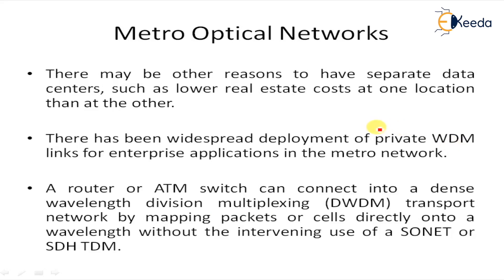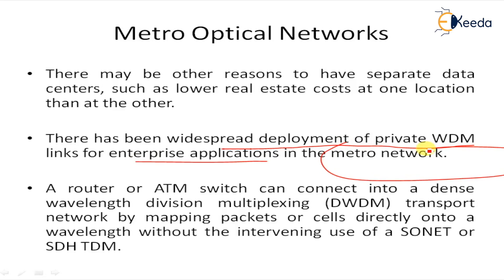This kind of scenario has generated widespread development of private WDM links for enterprise applications. For metro networks, a router or ATM — asynchronous transfer mode — switch can connect into a DWDM dense wavelength division multiplexing transport network by mapping packets, or in the case of ATM, ATM cells directly onto a wavelength, without the intervening use of SONET, SDH, or TDM.